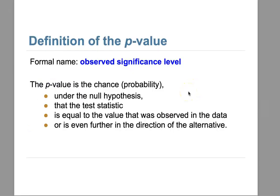The formal name for the p-value is the observed significance level. According to our null hypothesis, we draw a histogram from the empirical distribution based on the test statistic. It equals the probability of getting a value that we observe in the data or even further in the direction of the alternative. The p-value is the line we use to decide whether to accept the alternative or accept our model.